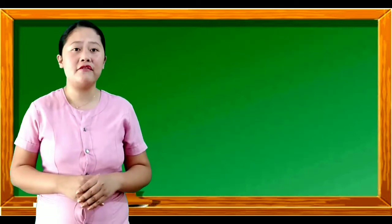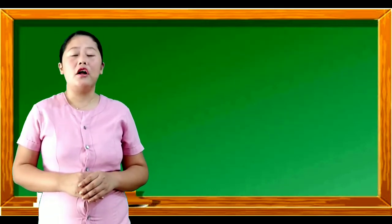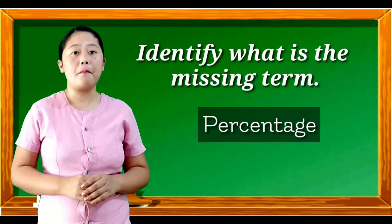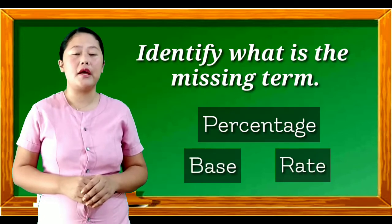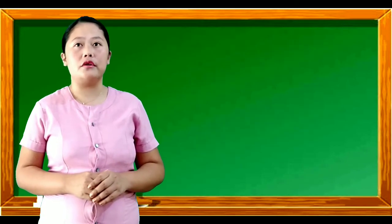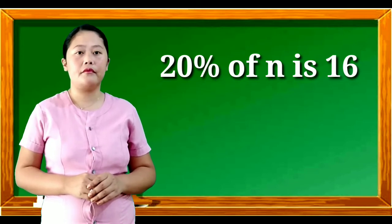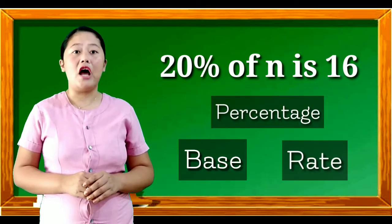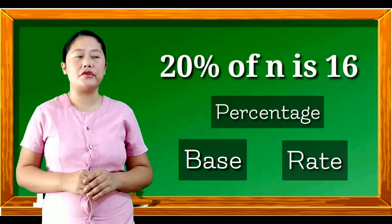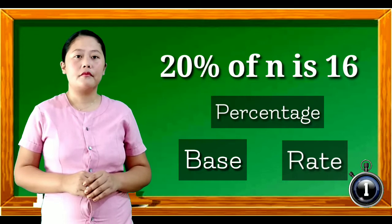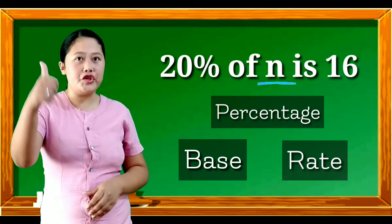Let's have activity number two. All you have to do is identify what is the missing term. Choose percentage, base, or rate. Here is the equation: 20% of N is 16. I will give you 5 seconds to answer.